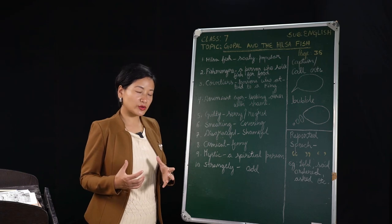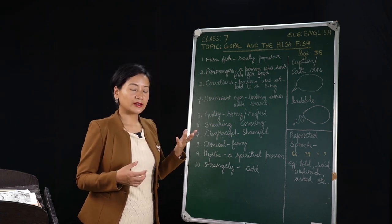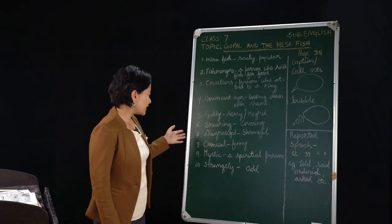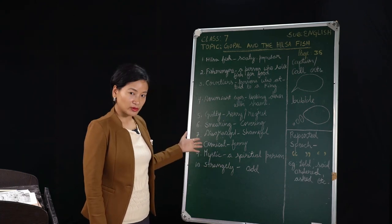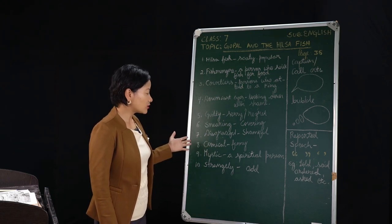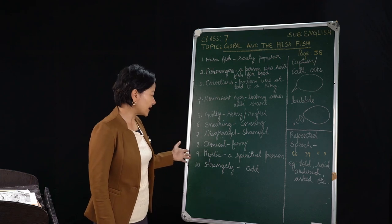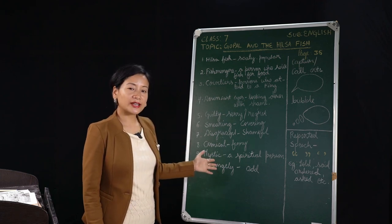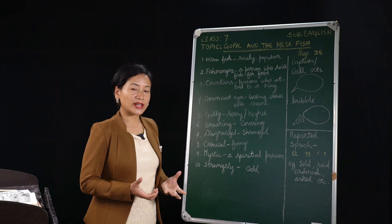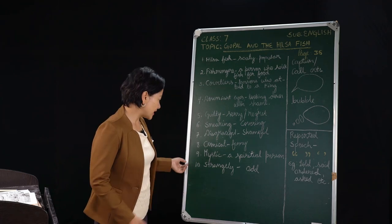So here the next point downcast eyes which means looking down with shame or out of shame. Next point here guilty, feeling sorry or regretful of what a person might have done. Number six, smearing which means covering. In our story here we can also say applying certain things on his face. Then seven, disgraceful which means shameful. Eight, comical which means looking very funny.